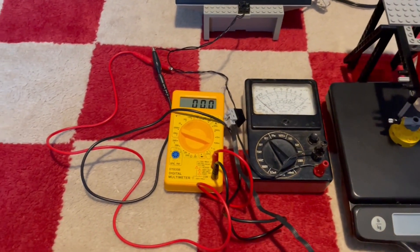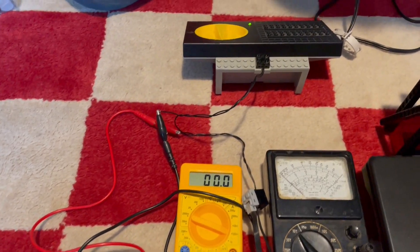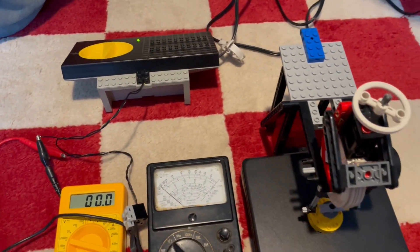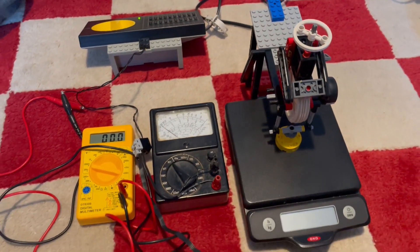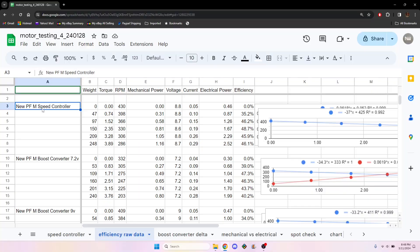I originally intended to test with this exact setup, but it seemed like the speed controller produced lower than 9 volts with some noticeable fluctuation.